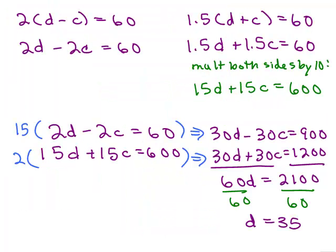One quick note. The original problems we had, 2 times d minus c equals 60 and 1.5 times d plus c equals 60, I told you it was easy to divide both sides by 2 for the first equation and by 1.5 on the other.